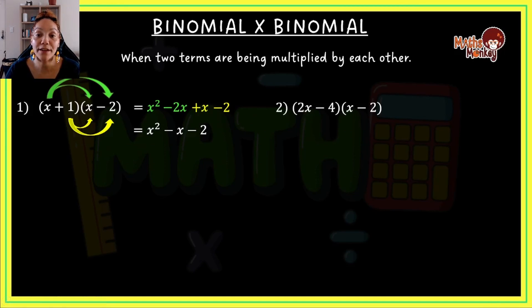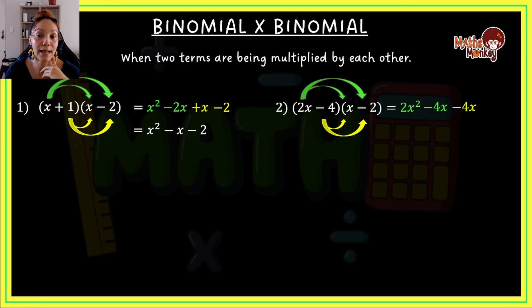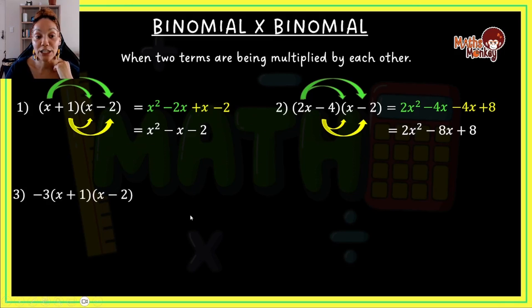Let's do another example. First term times first term gives 2x squared. Same term times the second term in the second bracket gives negative 4x — because 2x times negative 2 is negative 4x. Then negative 4 times x gives negative 4x. Negative 4 times negative 2 gives positive 8. Looking for like terms: negative 4x and negative 4x simplify to negative 8x. Final answer: 2x squared minus 8x plus 8.